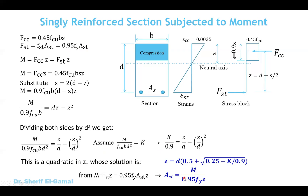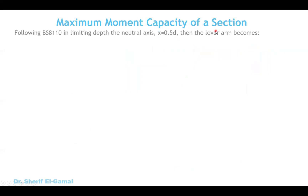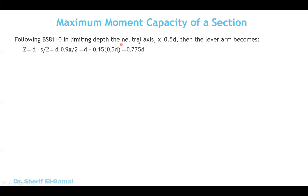To decide if the section will be singly or doubly reinforced — whether we need compression steel or not — we use the maximum moment capacity of a singly reinforced rectangular section. The BS code limits the neutral axis x to 0.5d to ensure tension failure. Substituting x equal to 0.5d: since z equals d minus s over 2 and s equals 0.9x, replacing x with 0.5d gives z equals 0.775d.